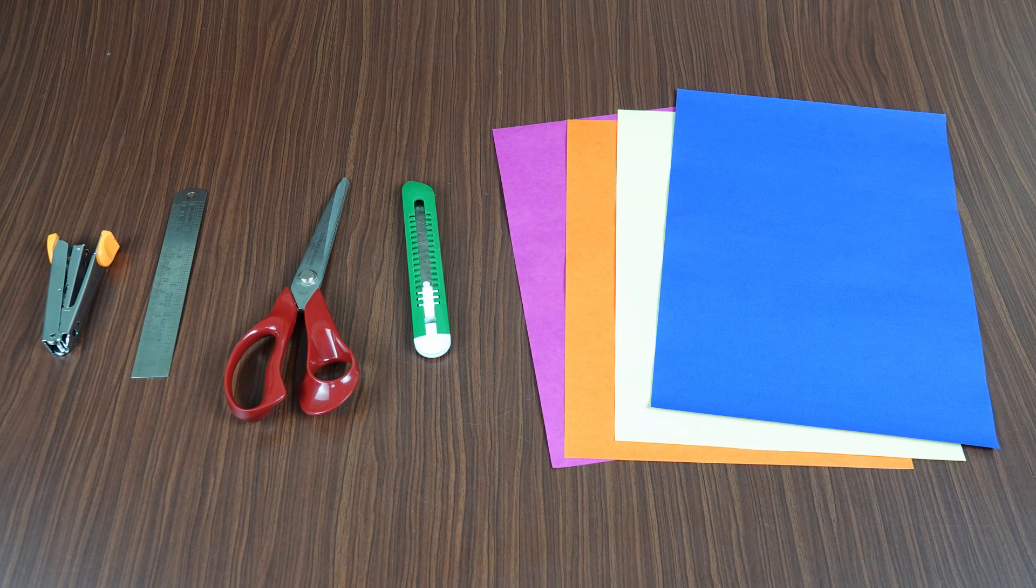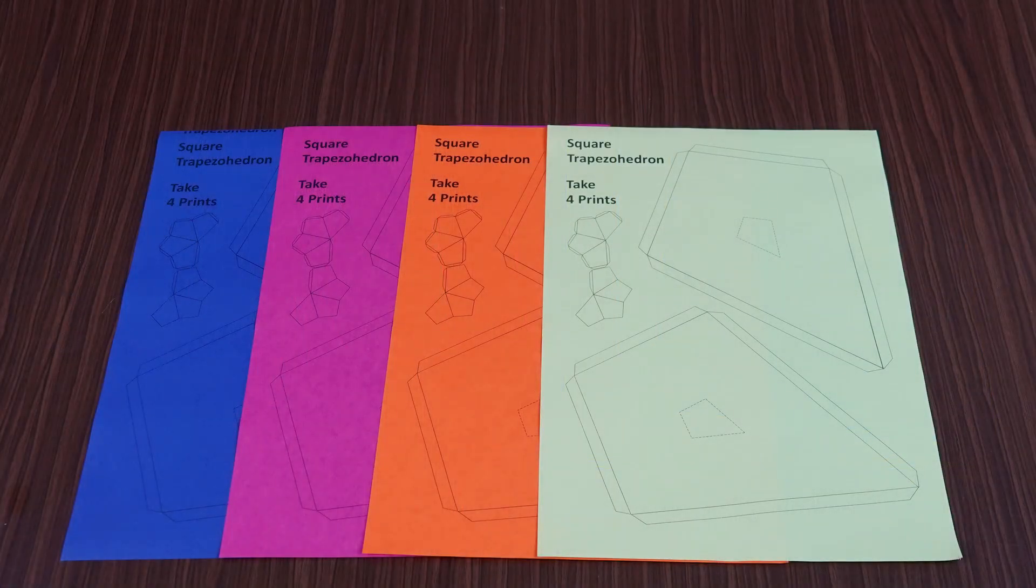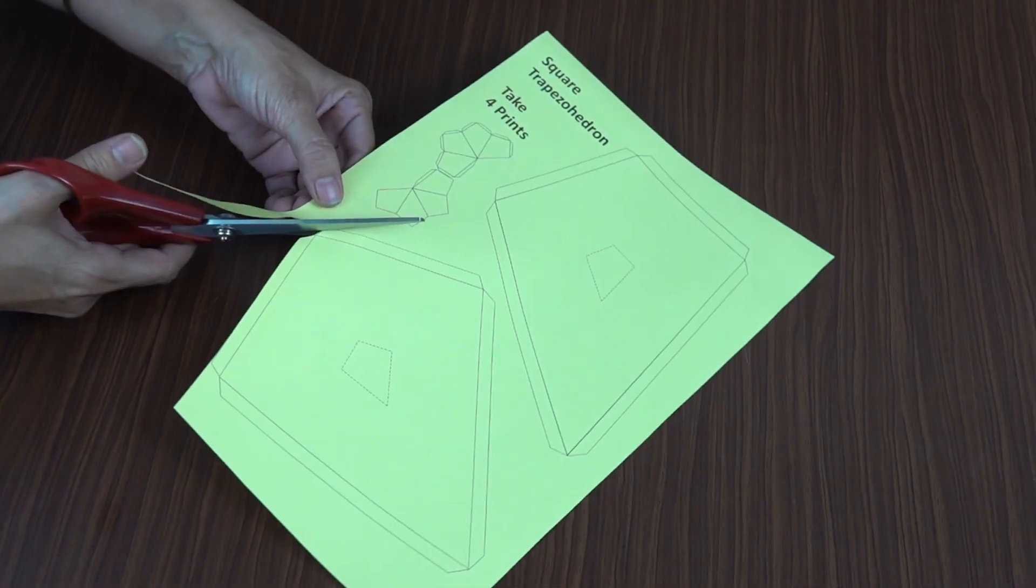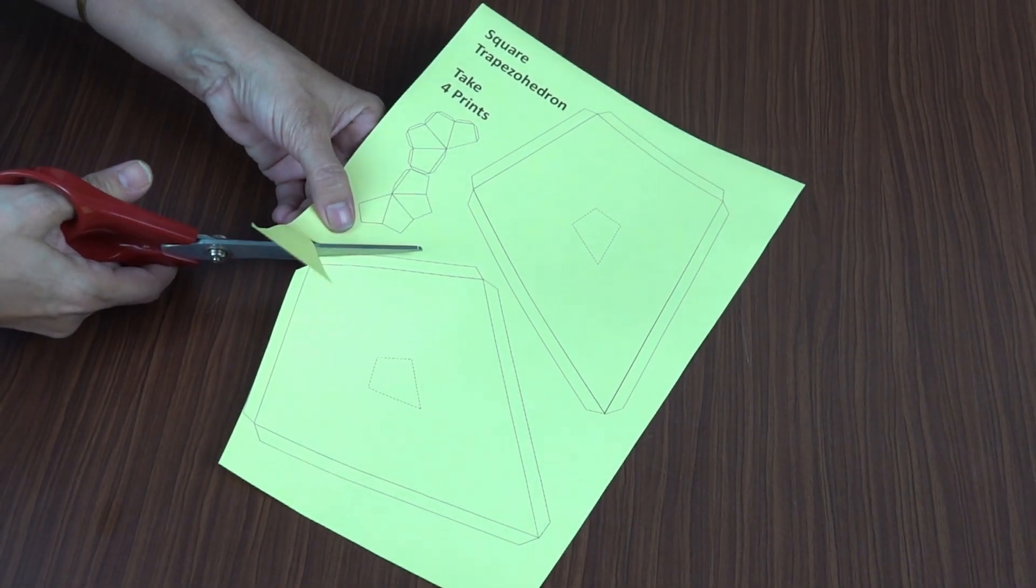First, check the description box of this video to find the template you will need for this lantern. Print the template on your chosen color paper and carefully cut it out following the provided directions.